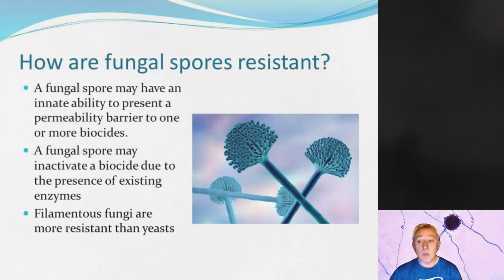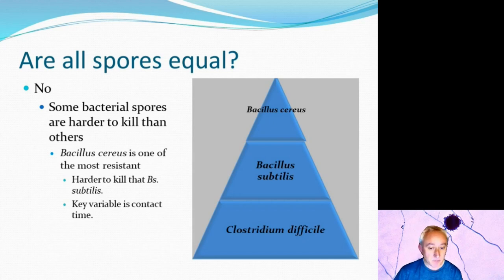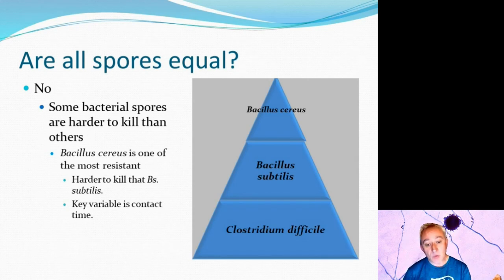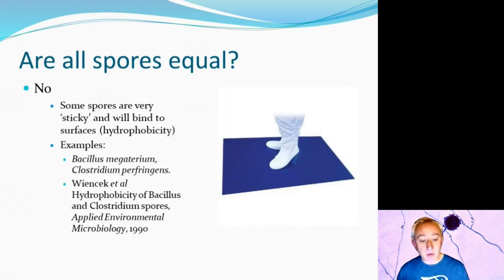We also need to be more nuanced when talking about spores because not all spores are equal. Just because a bacterium can form spores doesn't mean all species produce spores of equal resistance. Disinfectant test efficacy data suggests that some bacterial spores are harder to kill than others — for example, Bacillus cereus is more resistant than Bacillus subtilis, which can cause problems when developing a disinfectant regime for a cleanroom. Another factor is that some spores are stickier than others — some are indeed very sticky.